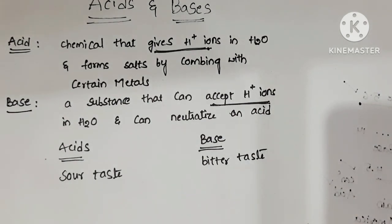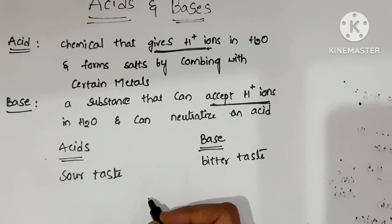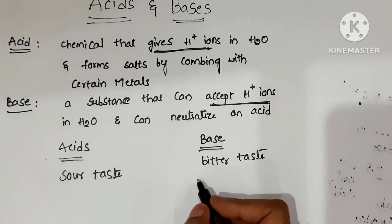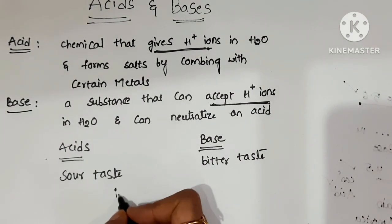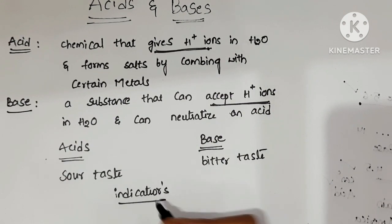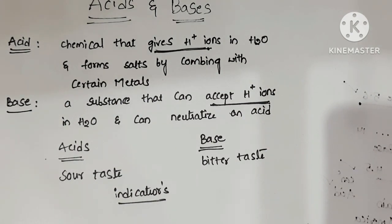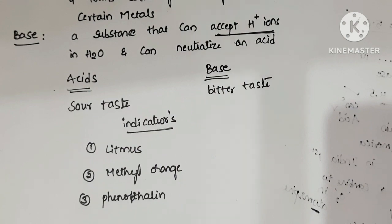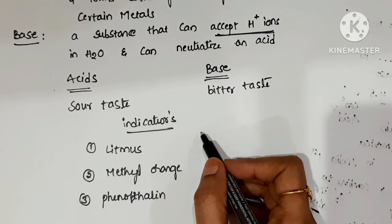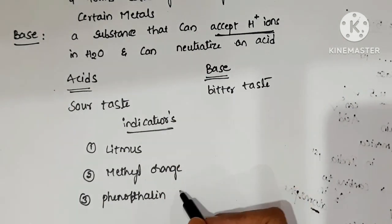How do we detect whether a substance is acid or base? We have to use indicators. Indicators are used in laboratories, studies, and colonies to detect whether substances are acid or base. Generally we use litmus, methyl orange, and phenolphthalein.